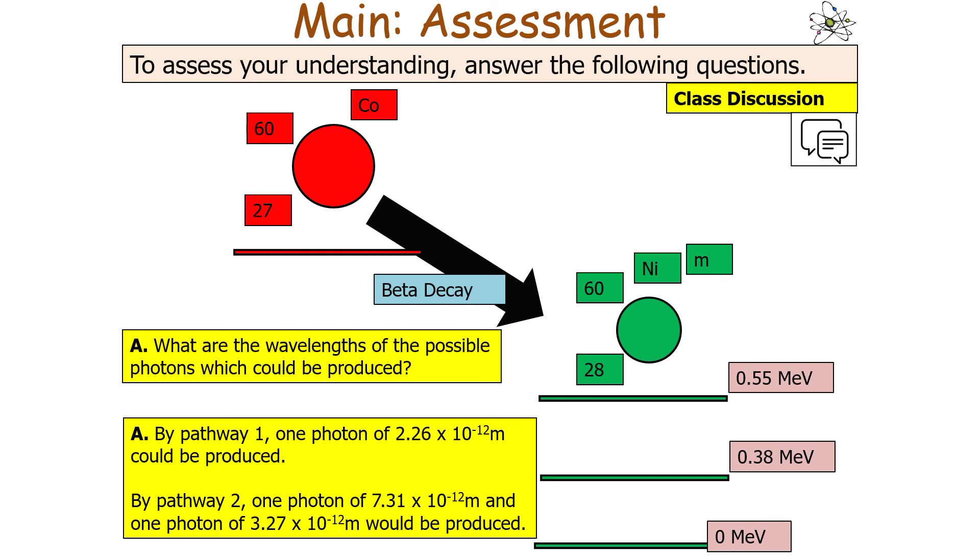Remember, all these photons produced in this emission process are traveling at the speed of light. You'd use the same methodology for pathway 2 and you'd get two photons: one of wavelength 7.31 times 10 to the minus 12 meters and another one of 3.27 times 10 to the minus 12 meters.